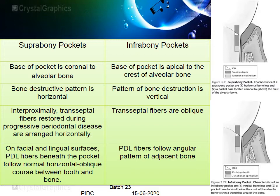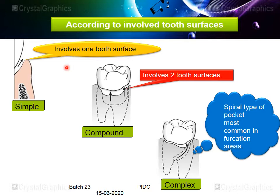According to the involved surfaces, pockets are classified into three types: simple — involving just one surface, such as only the mesial surface; compound — involving two surfaces, such as both the mesial and buccal surfaces; and complex — involving more than two surfaces. An example of a complex pocket is the spiral type, which starts at the furcation, moves around the tooth, and opens on the other side, involving more than two surfaces.